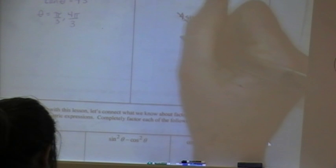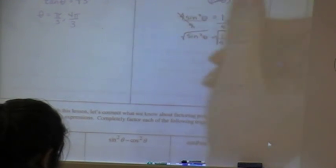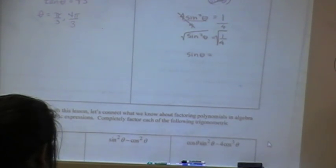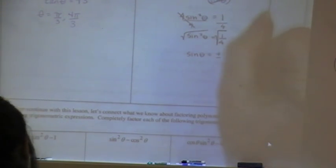Take the square root. Take the square root of both sides. That gives me sine theta equals, what's the square root of 1 fourth? 1 half. 1 half. But don't forget, when you take a square root, there's actually two answers. Positive and negative. So it's positive and negative 1 half.